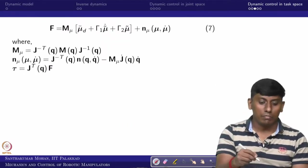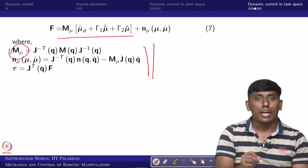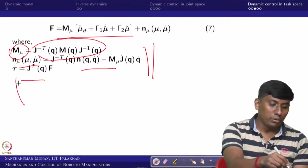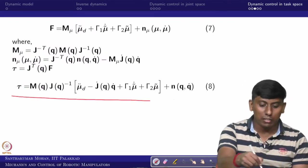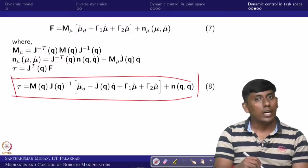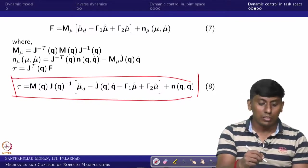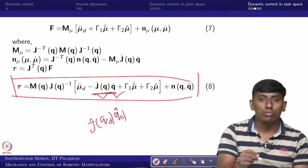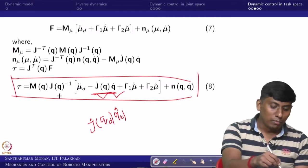We know certain relations: M(mu) can be written in a specific form, N(mu, mu-dot) similarly, and tau can be written in terms of f. Now we substitute everything — working in joint space because the actuator is connected at the joint level. The modified equation comes out this way. There are two options: use J-dot(q-desired) and q-dot-desired, or use simple feedback. We can use actual feedback — either way works.